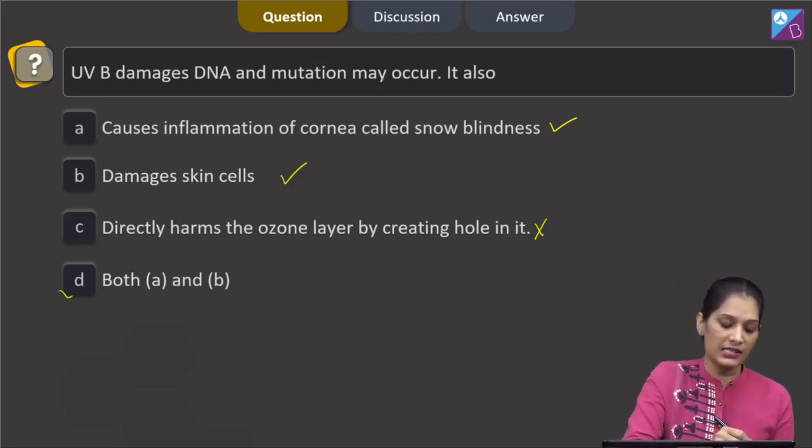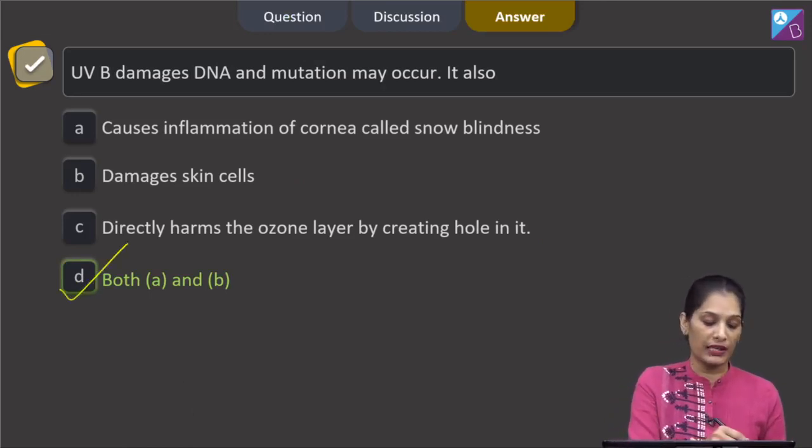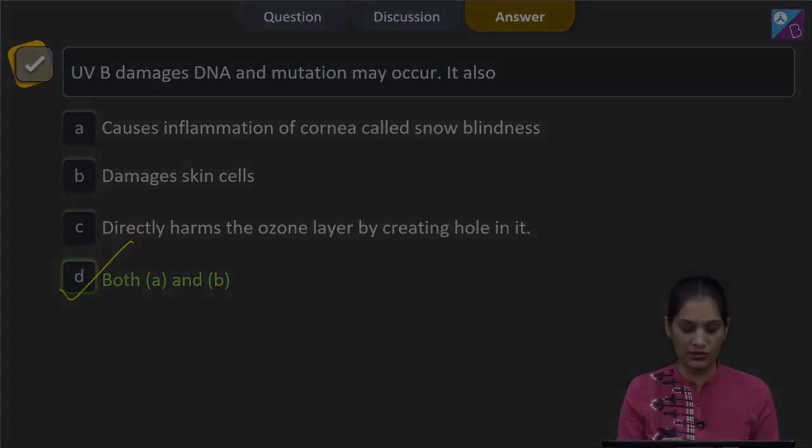D: both A and B. Yes, this is correct one. So the correct option for the given question is option D which says both A and B. Let's pick up the next question.